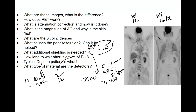What type of material are the detectors? Typically BGO or LSO. We covered a lot, but PET and PET-CT is important — definitely brush up on these topics and dive deeper on your own time. Expect a question related to PET or PET imaging on your exam. If you have any questions, please comment below.